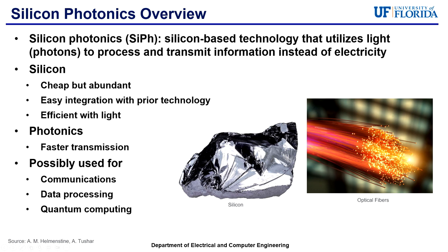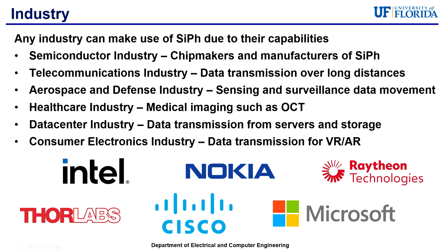With how ubiquitous electronics are, industries are gearing up to make silicon photonics just as commonly used. Any industry can make use of silicon photonics due to their capabilities. Companies such as Intel in the semiconductor industry are involved with silicon photonics, as they are the chip makers and manufacturers. Companies in the telecommunications industry, such as Nokia, are experimenting with silicon photonics to help with improving data transmission speeds over long distances, especially for phone calls.